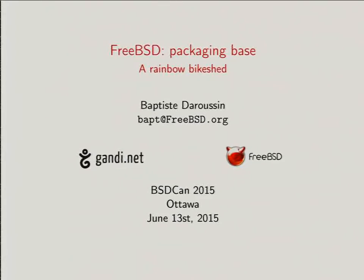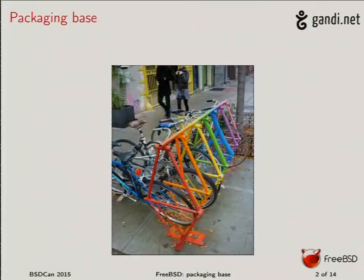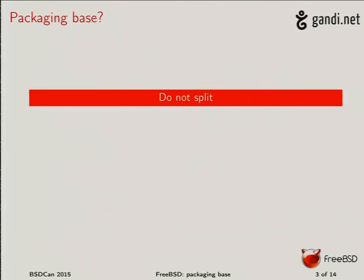I went to the mailing list and asked a lot of people what they expect. Basically, some people said: please do not split, do not ever touch how we provide FreeBSD right now. But those people forgot that before FreeBSD 9, it was already split into multiple sets that you could choose to install or not. So it was already split somehow.